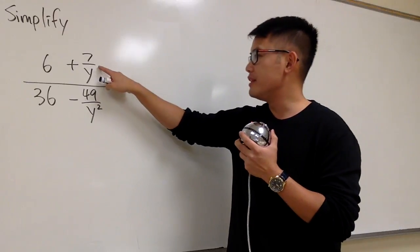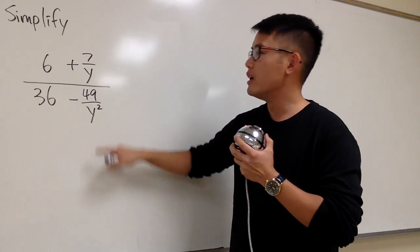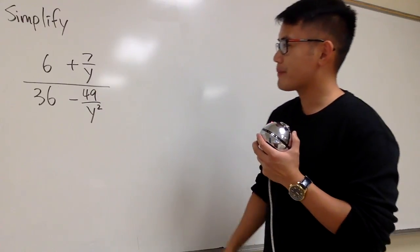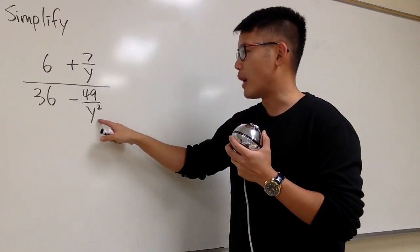And as we can see, we only have these two little fractions. We first focus on the little denominators like this and that. So, here we have y, here we have y squared.